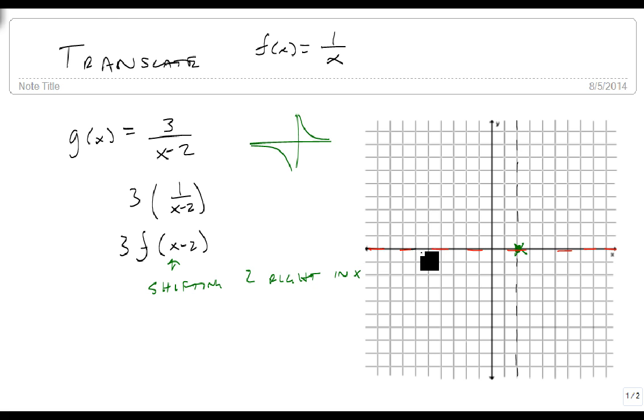Again, remember we can't cross this one, but we can cross this one. Our normal graph is going to have a point at 1, 1 and minus 1, minus 1.